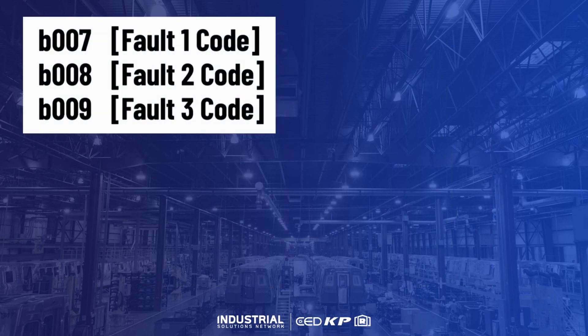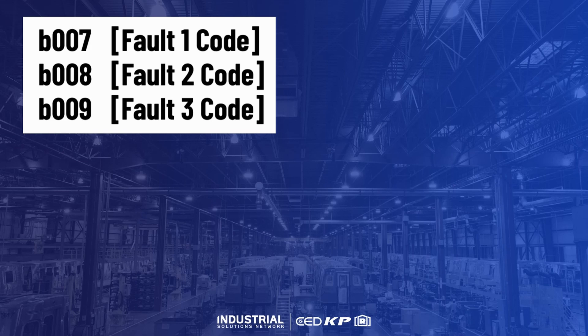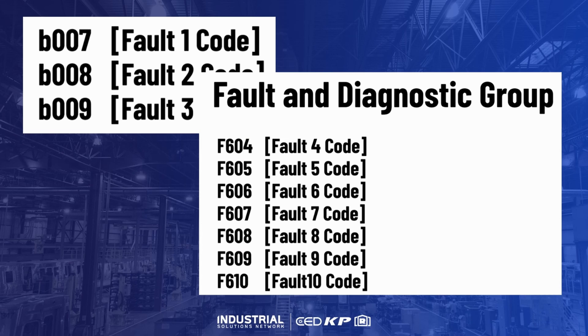Remaining in the basic display folder, parameters B7, B8, and B9 will provide you with the three most recent fault codes. Within the fault and diagnostic folder, you will find the next seven fault codes for the 520 series, for a total of 10 historical fault codes.